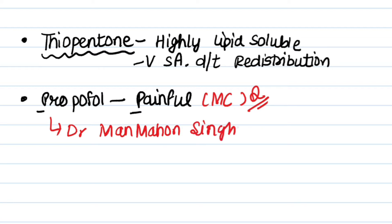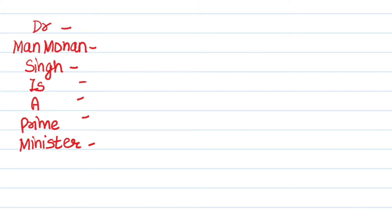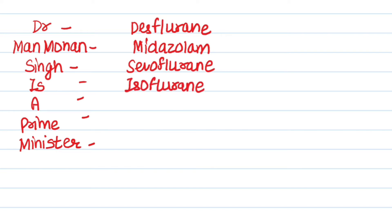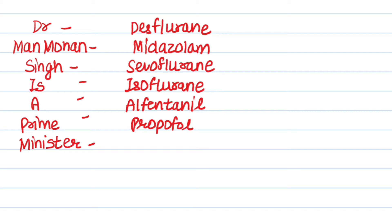The drugs used in daycare surgery — the mnemonic is Dr. Manmohan: D means Desflurane, M means Midazolam, S means Sevoflurane, I means Isoflurane, A means Alfentanil, P means Propofol, M means Mivacurium. These are all the drugs used in daycare surgery.